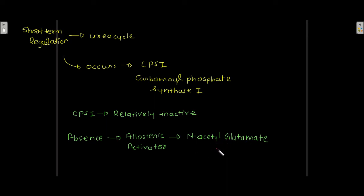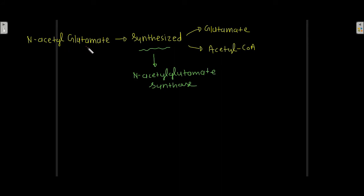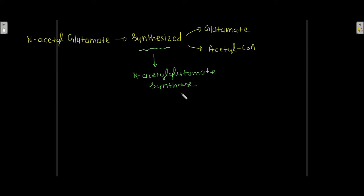N-acetylglutamate is synthesized from glutamate and acetyl-CoA, and this synthesis is catalyzed by the enzyme N-acetylglutamate synthase. This enzyme is quite important in the regulation of the urea cycle: if N-acetylglutamate synthase is present, N-acetylglutamate will be formed, which will then activate CPS1 and thereby activate the urea cycle.